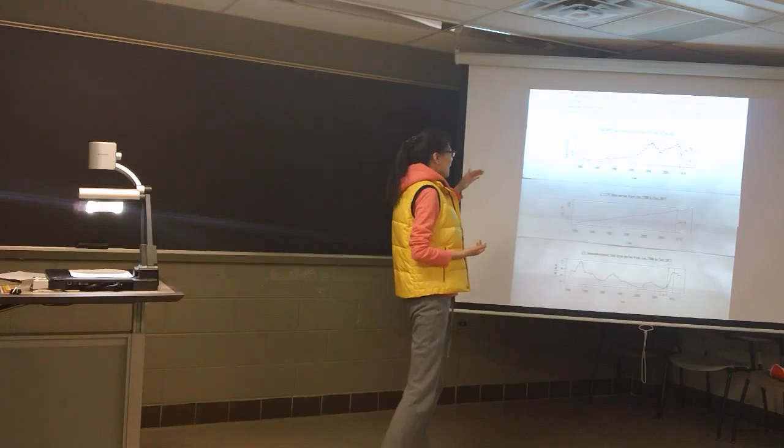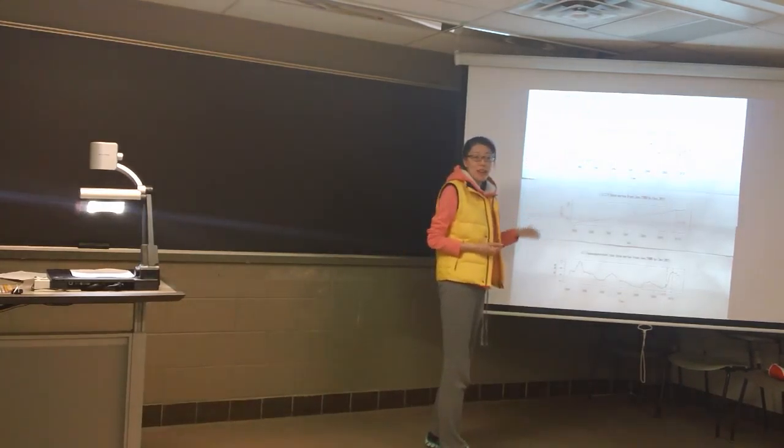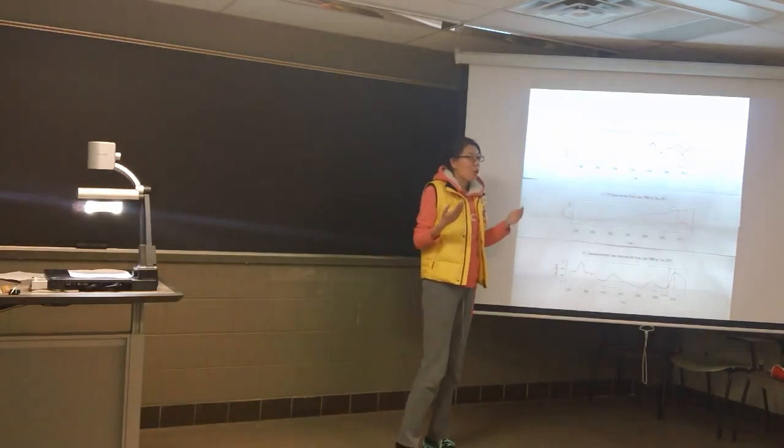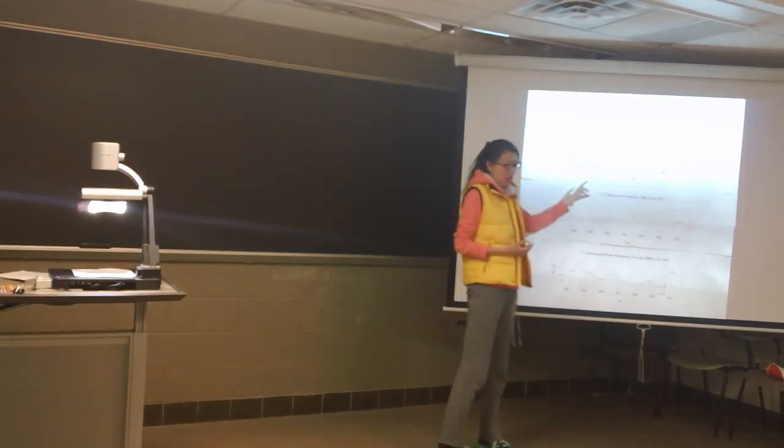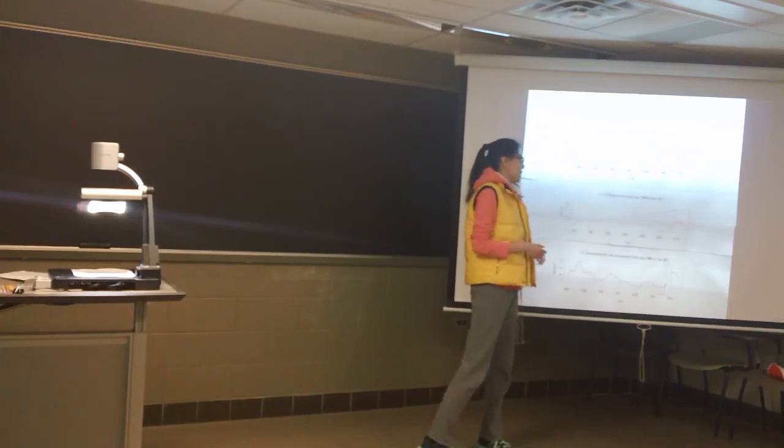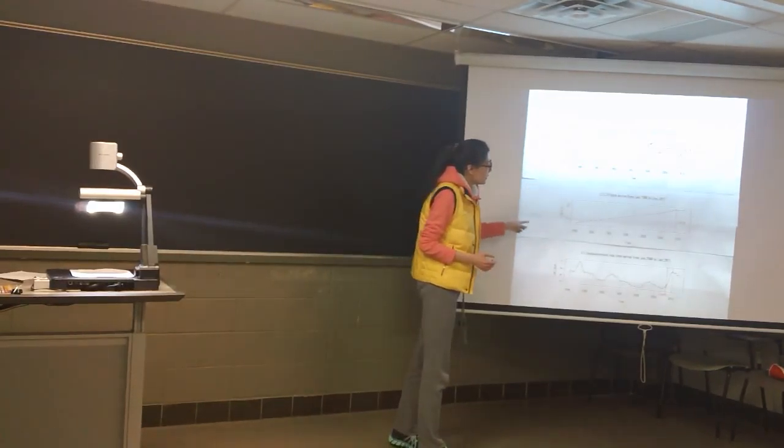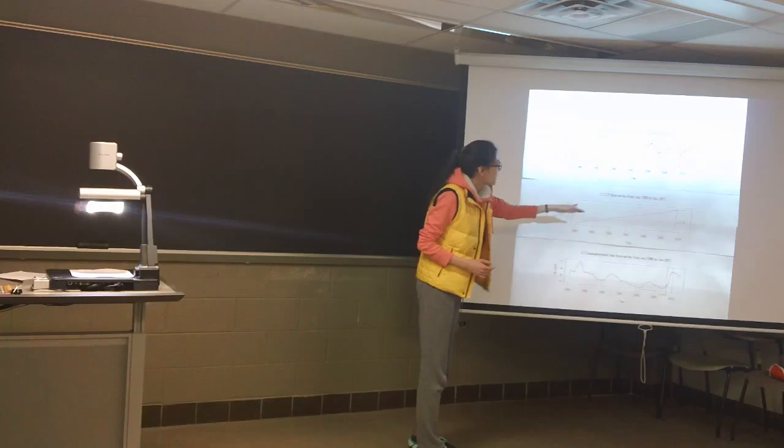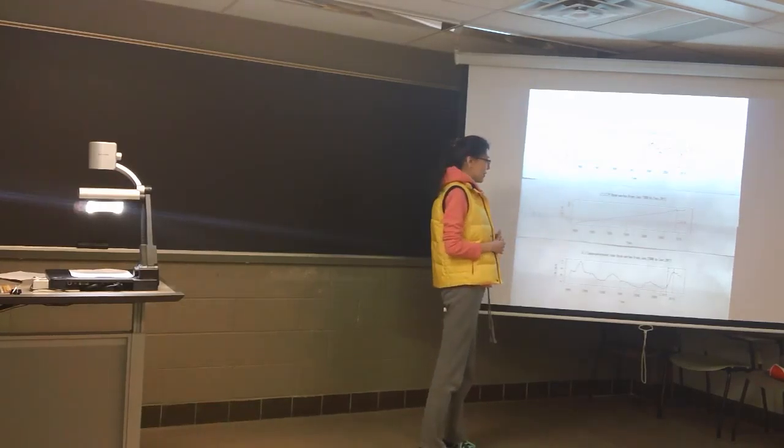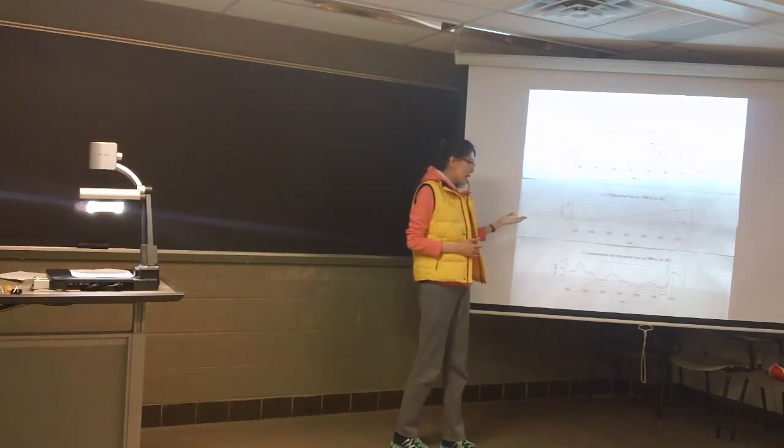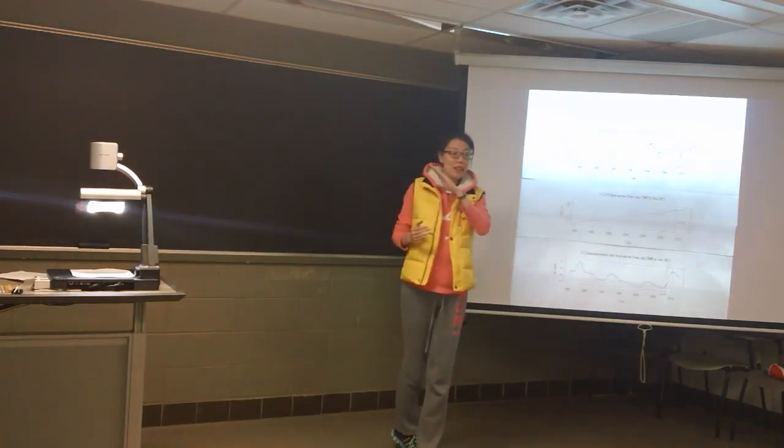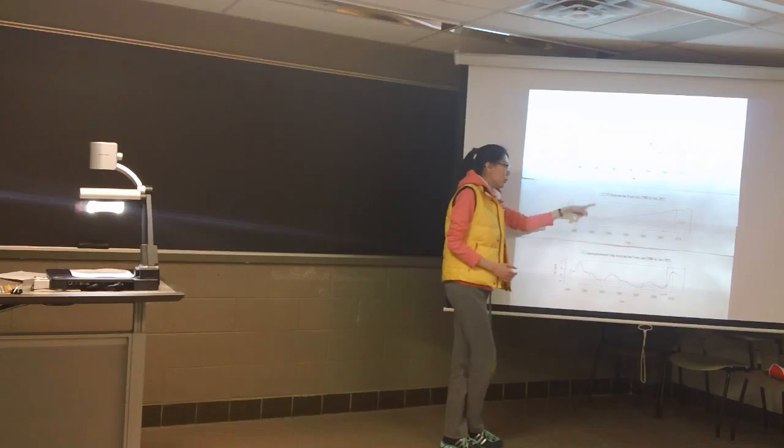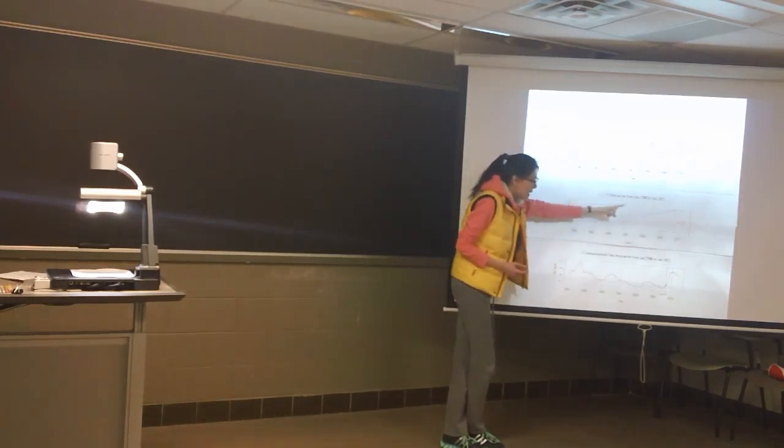So we can see the stock price is normally unstable - go up and go down. So we can only focus on the large change, maybe increase or decrease. Please look at the second graph. This is CPI from the same periods from 1980 to 2011. As we can see, CPI will go up all the time, but only in this point, it shows a large decrease, maybe at 2008.